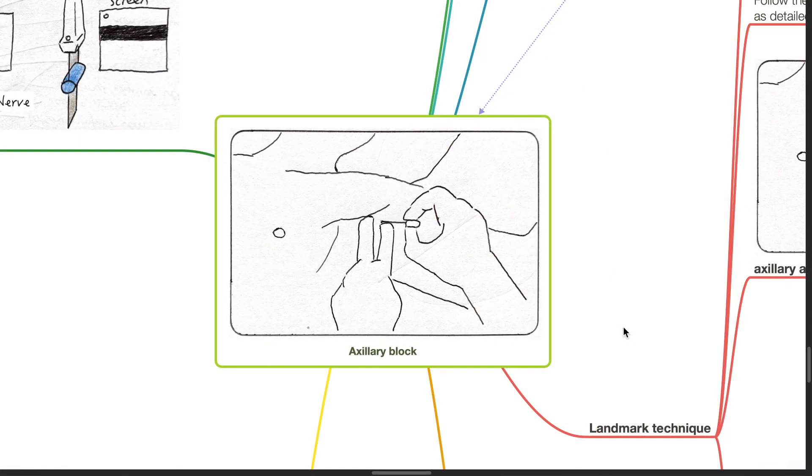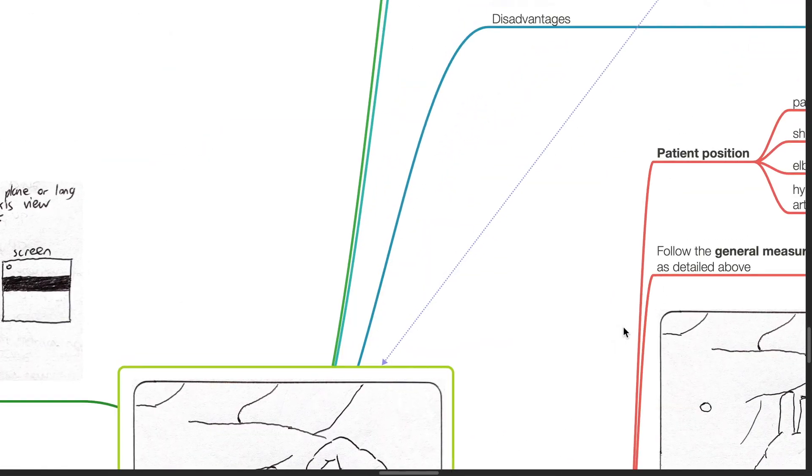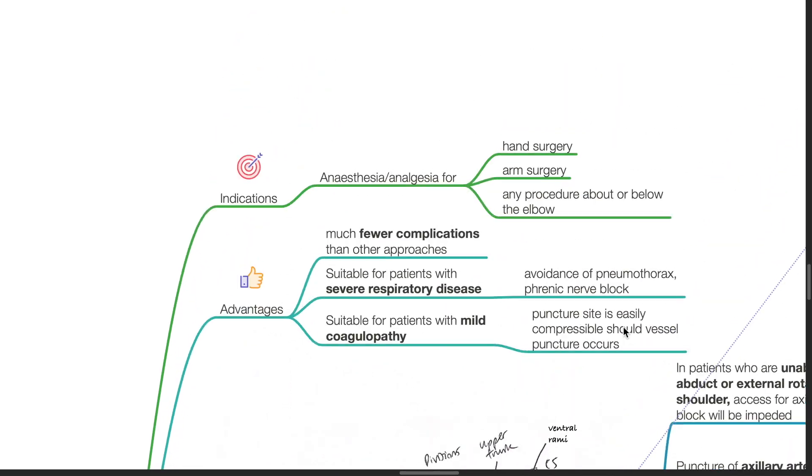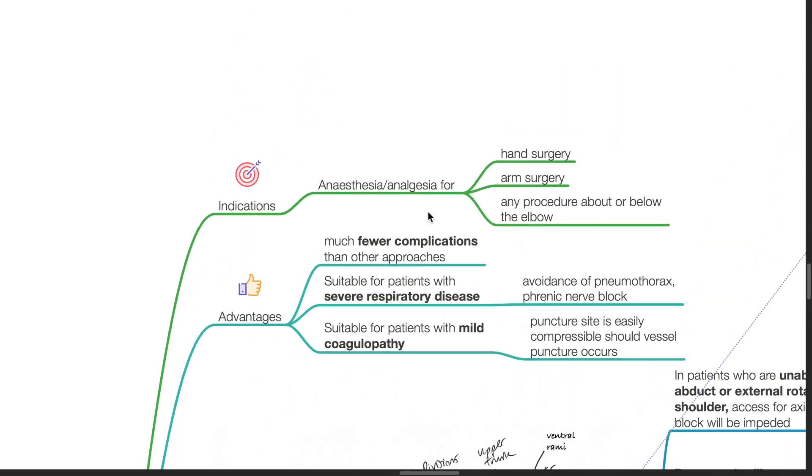Auxiliary brachial plexus block. Indications include anesthesia or analgesia for hand surgery, arm surgery, or any procedure above or below the elbow.